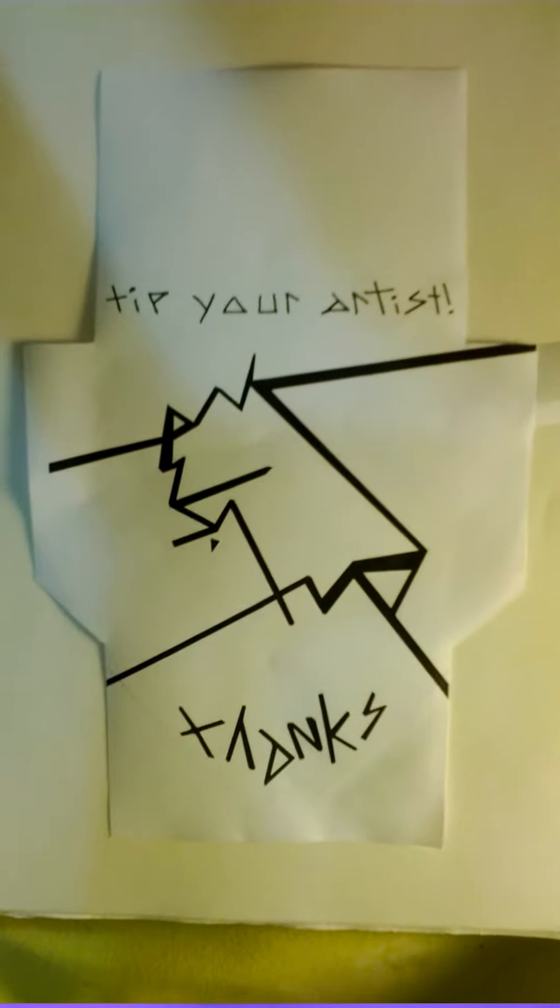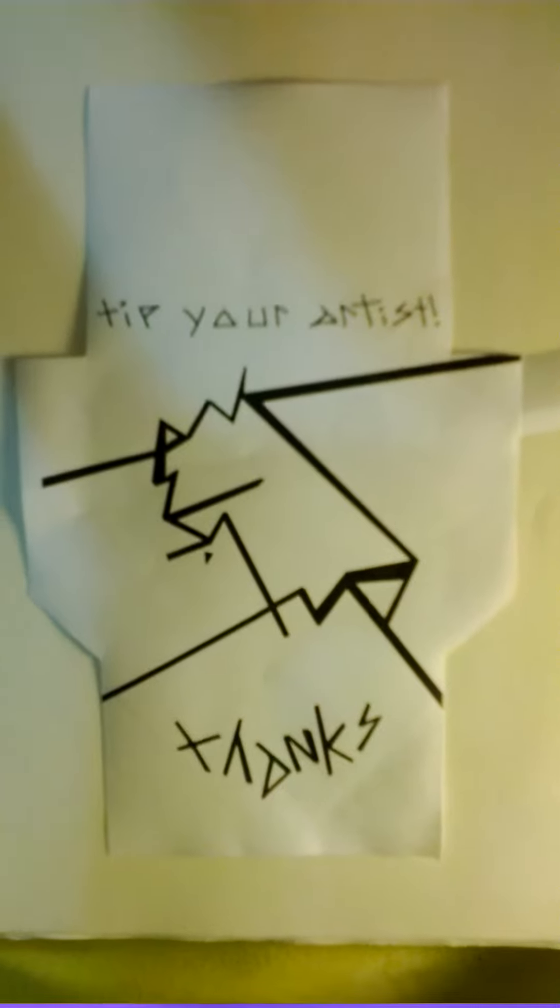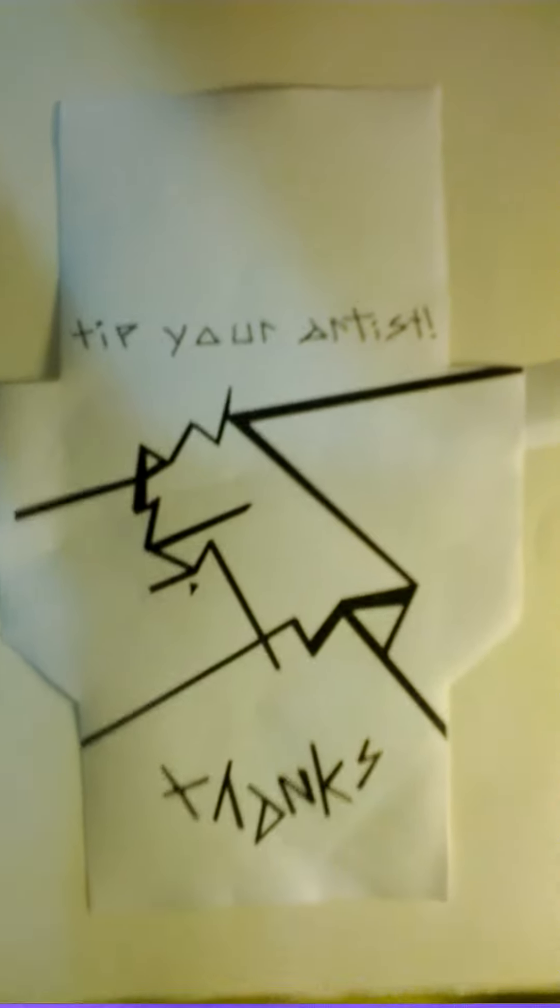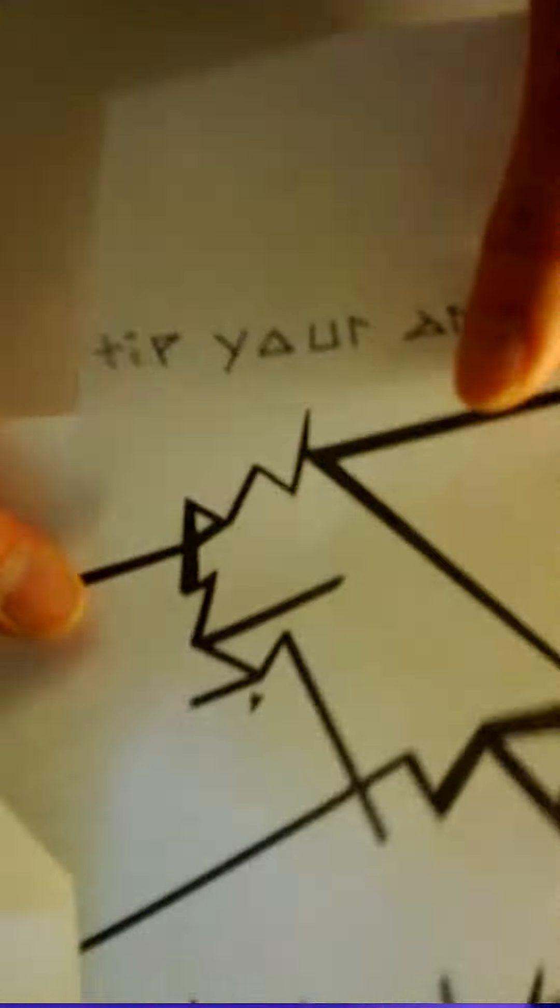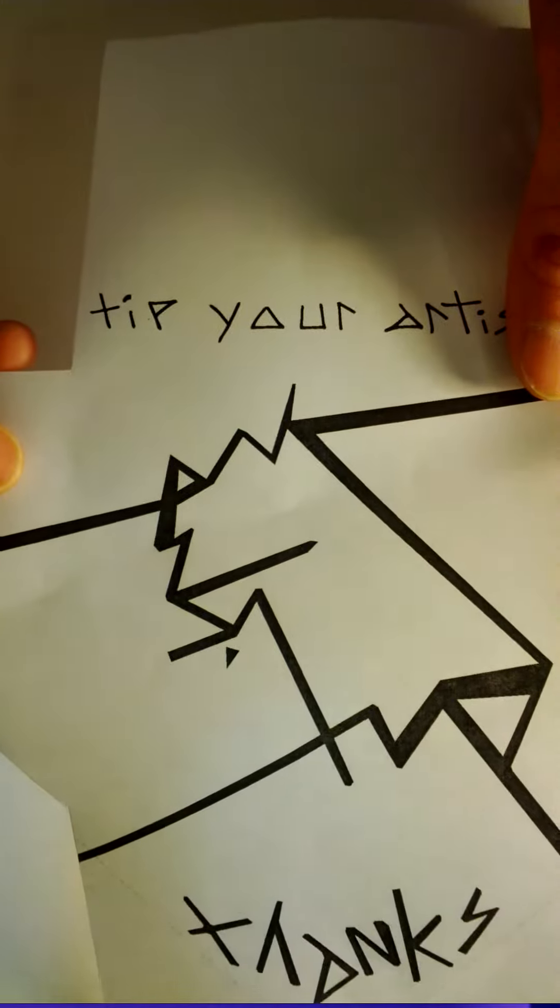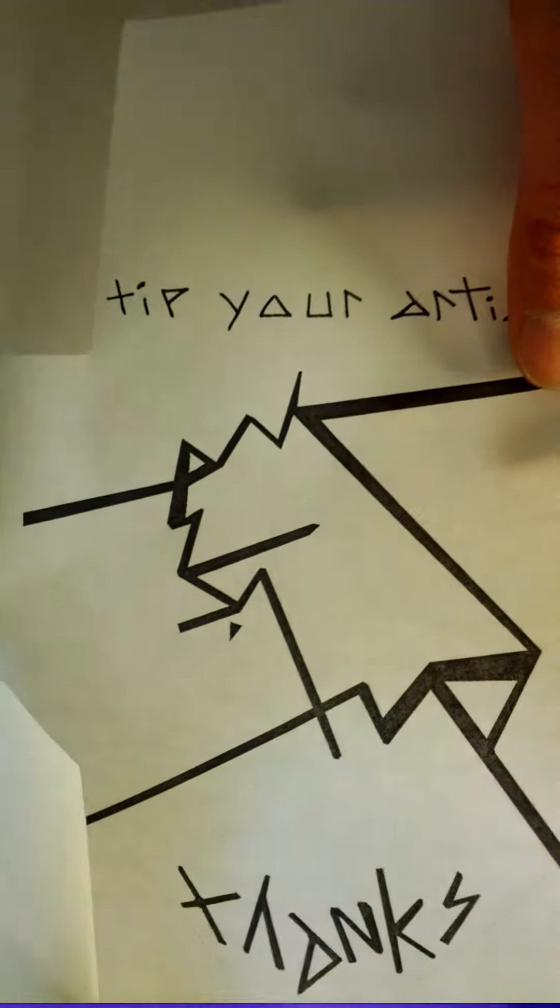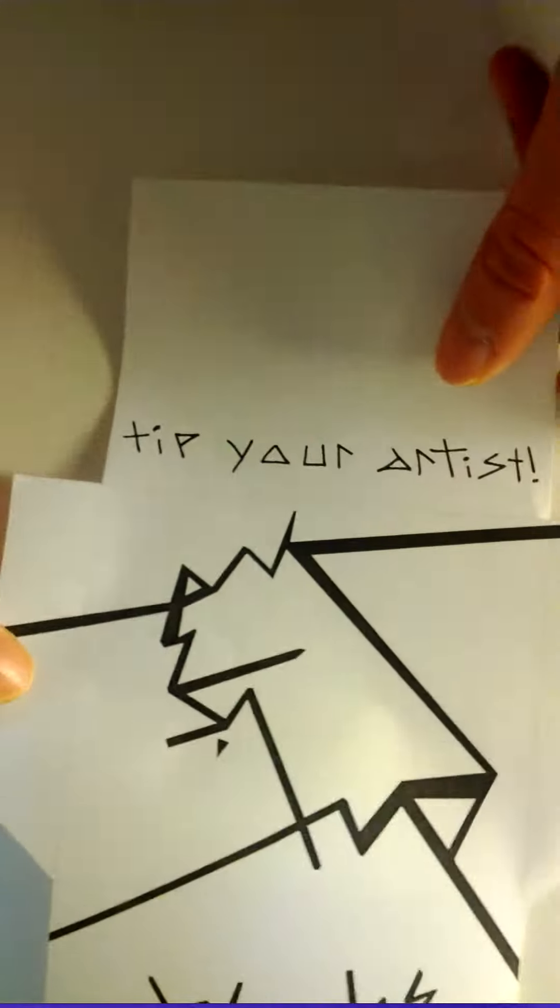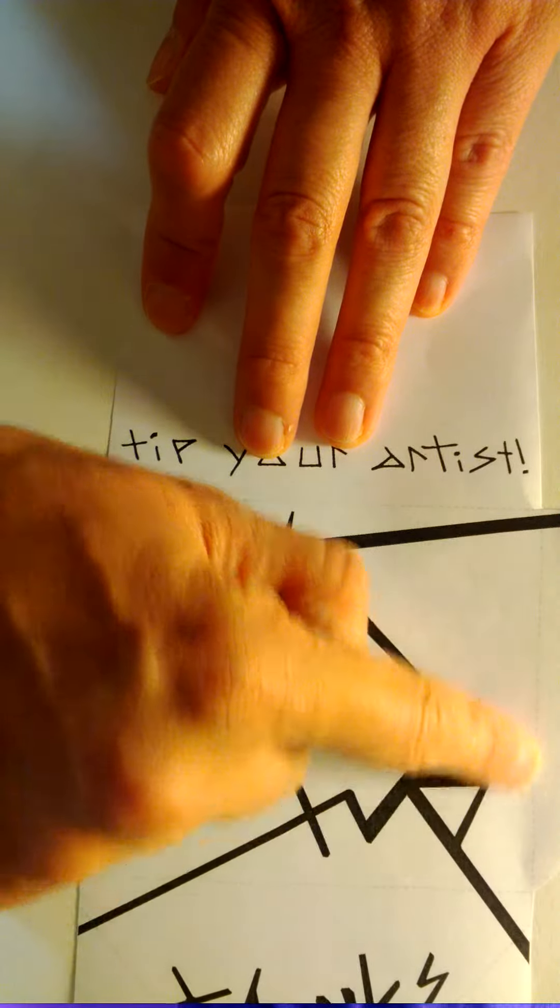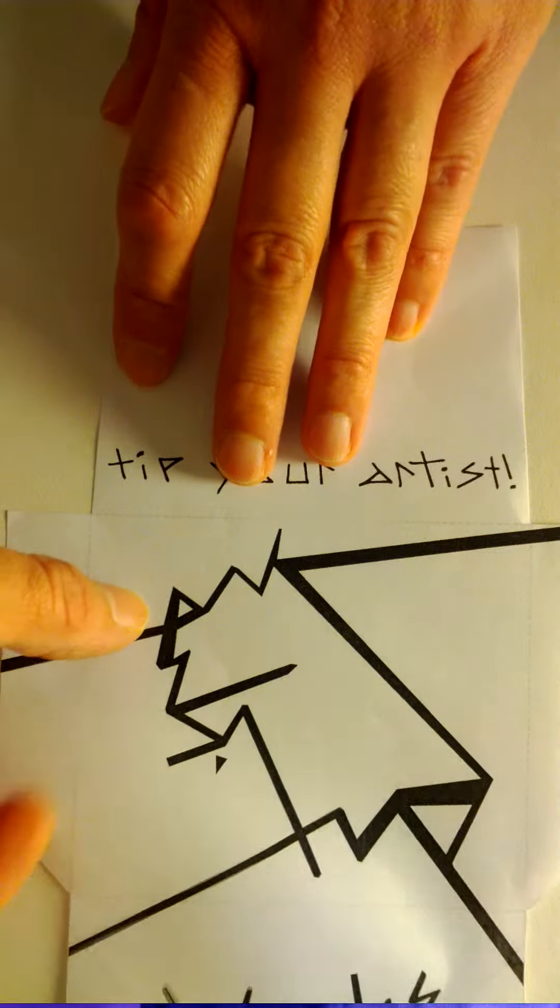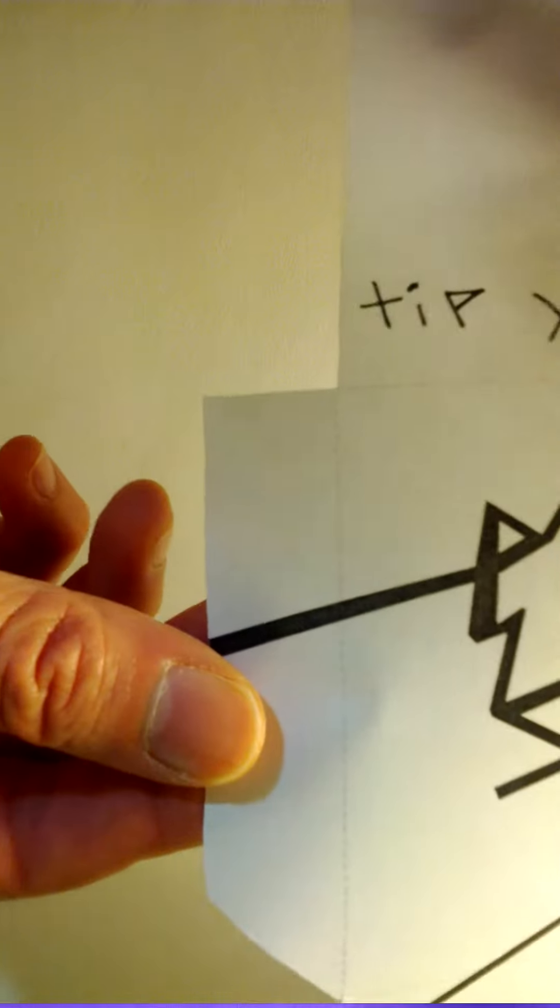So here you have the finished cutout. And next, you fold it. On my website, I have a file which has these dashed lines right here, and they show you where the folds need to be. So to fold it, you flip it over so that the printed side is down.